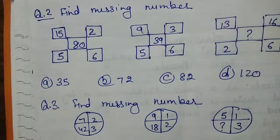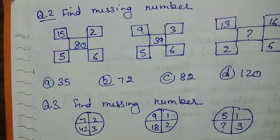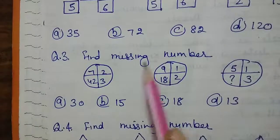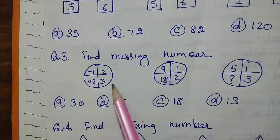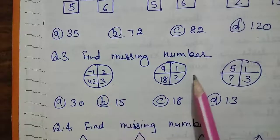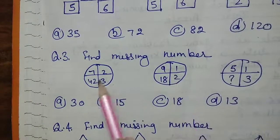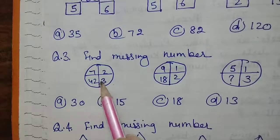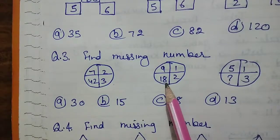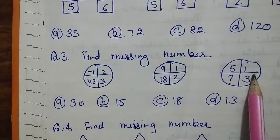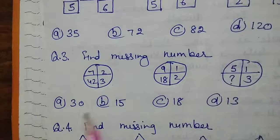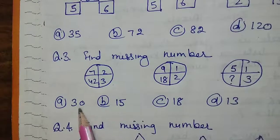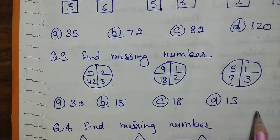Now move to the third question of homework: find the missing number. A circle is given with some digits. In the same way, find the relation between the numbers, check whether it is true for the second circle, then find the missing number in the third case. The given options are 30, 15, 18, and 13.